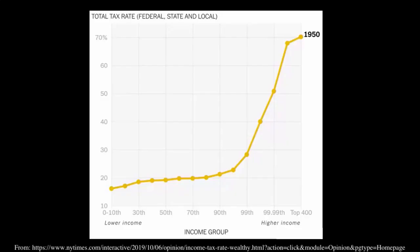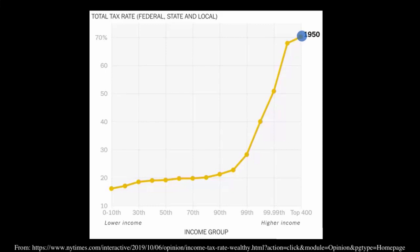We can look at data from a New York Times article that shows how the total tax rate — federal, state, and local combined — has changed over time. In 1950, those from the zero to the 10th percentile, the bottom 10th in income, had an effective total tax rate of around 16 or 17%. Those in the 99th percentile had an effective tax rate approaching 30%, those in the 99.99th percentile a little more than 50%, and those in the top 400 had an effective tax rate of 70%. This includes all forms of taxes.